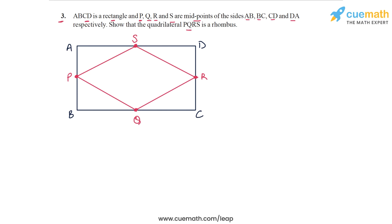To prove this fact we will use the result we proved in question 1 of this exercise, where we proved that if you join the midpoints of the sides of a quadrilateral you get a parallelogram. I'm going to prove that result briefly here, but if you want to understand it in detail you can go back to the video of question 1 and watch it again.